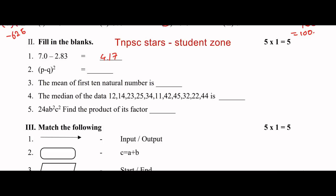Next: (p minus q) whole square. This is a formula: p squared plus q squared minus 2pq.